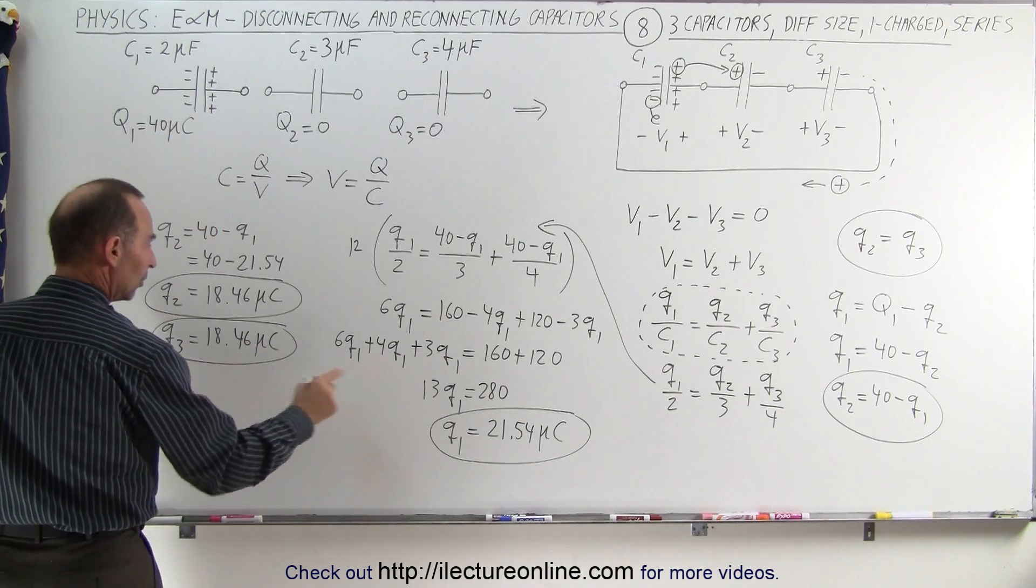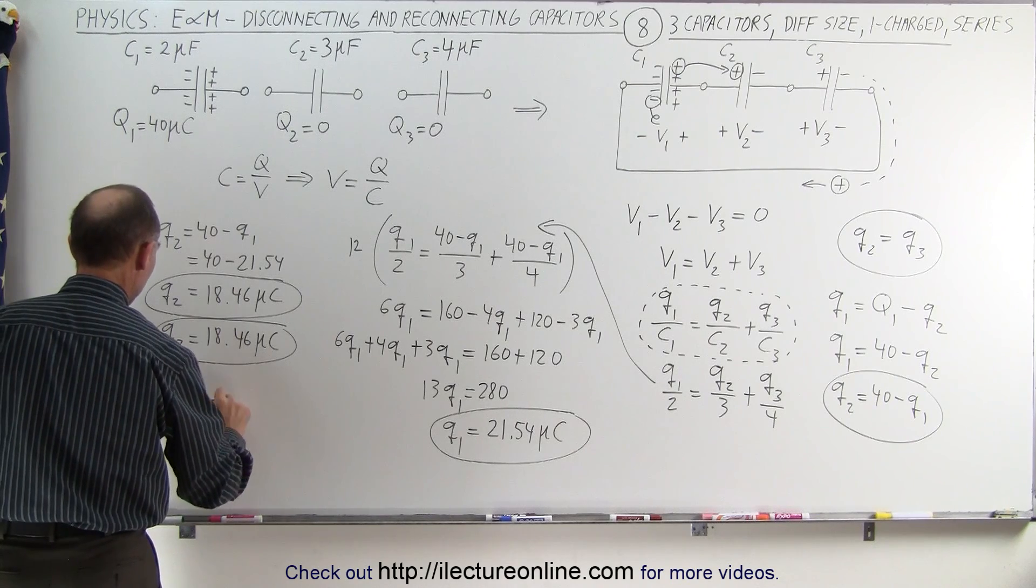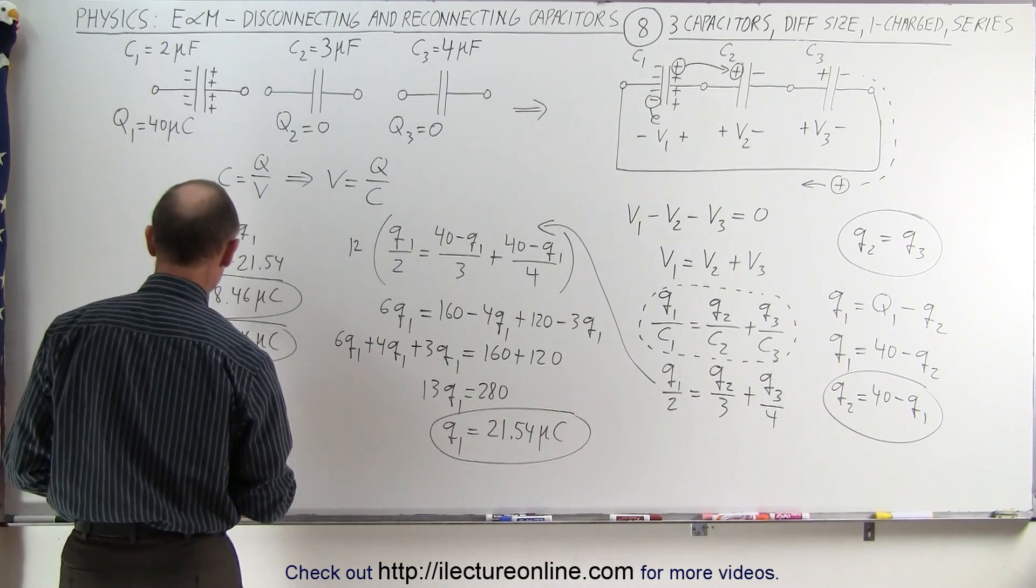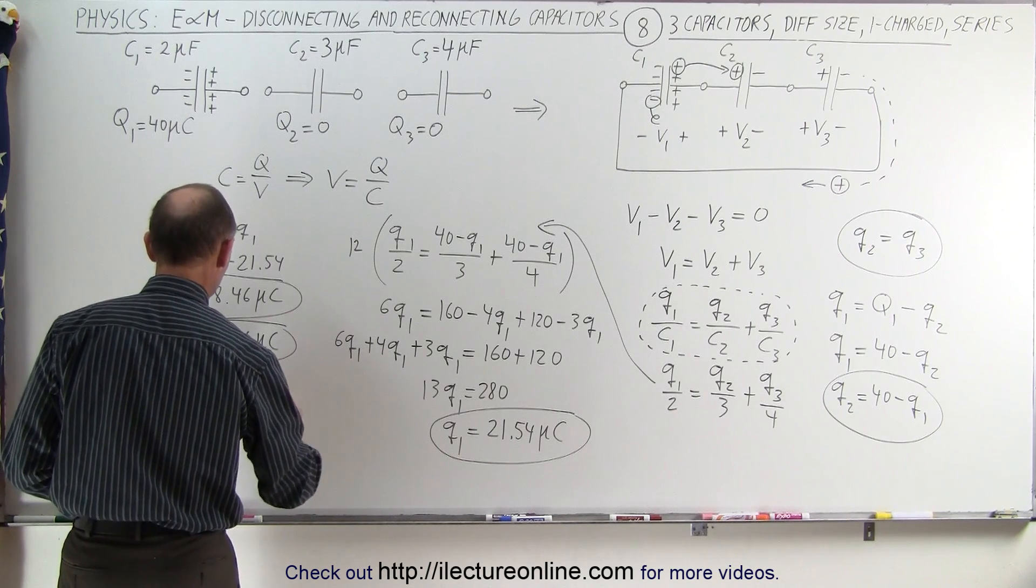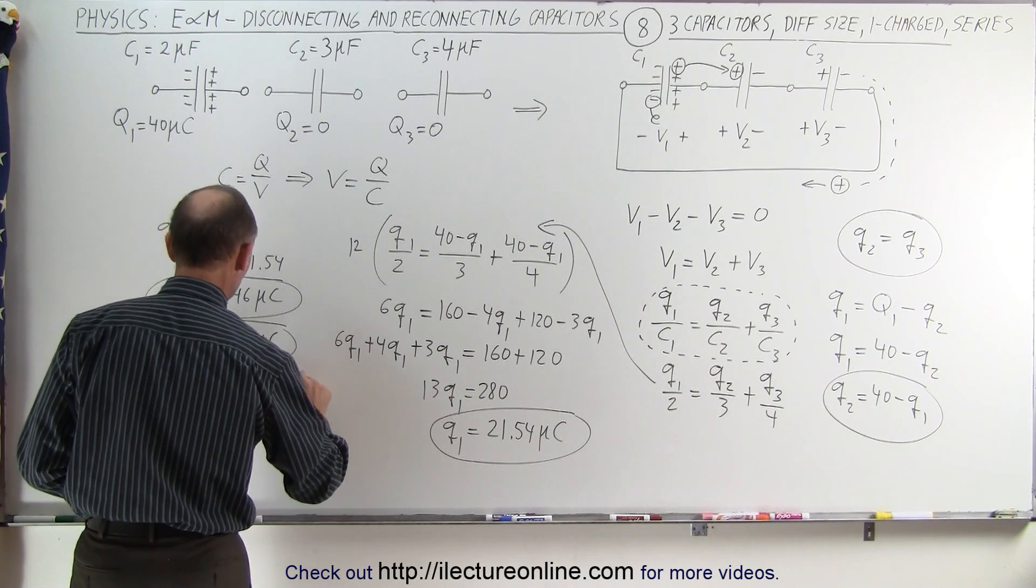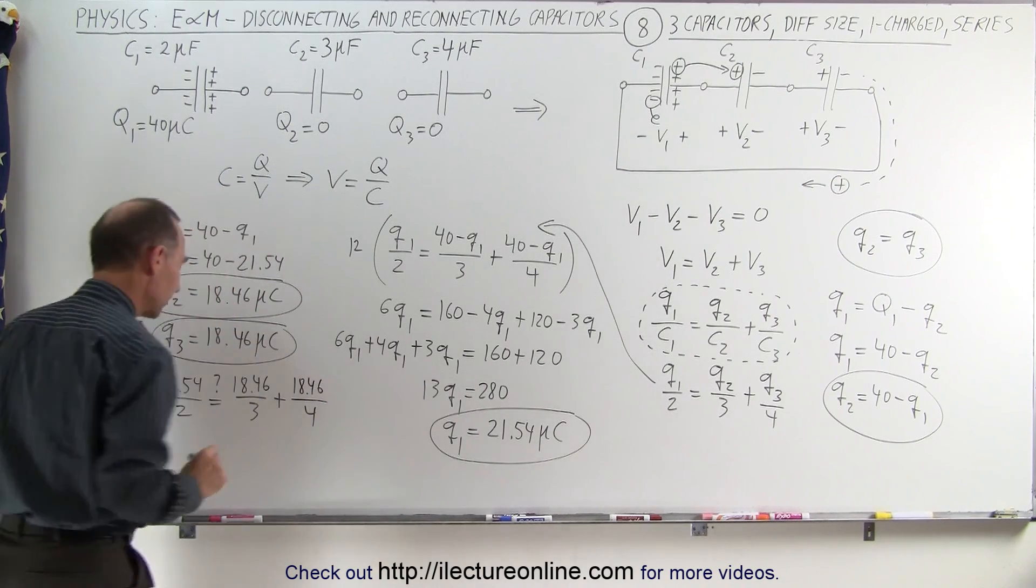So when we come over here, Q1, which we said was 21.54 divided by 2, is that equal to Q2, which is 18.46 divided by 3, plus Q3, which is 18.46 divided by 4.